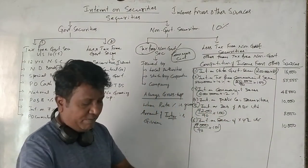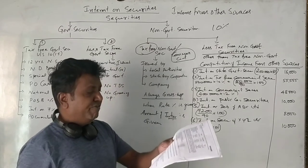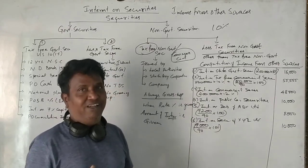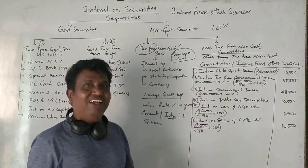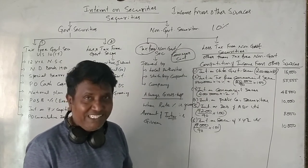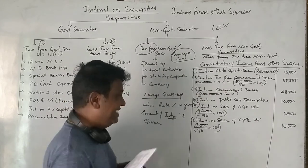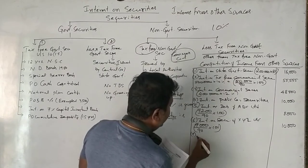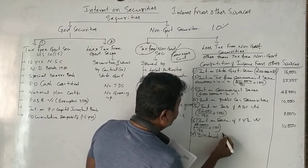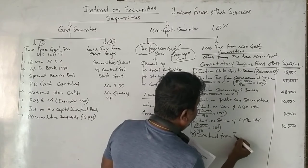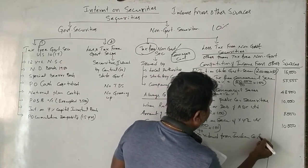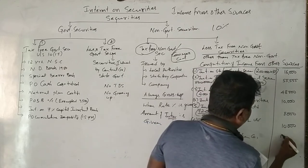Next: 5,000 dividend received from Indian company. Any dividend received from an Indian domestic company is exempted. So dividend from Indian company is exempted.